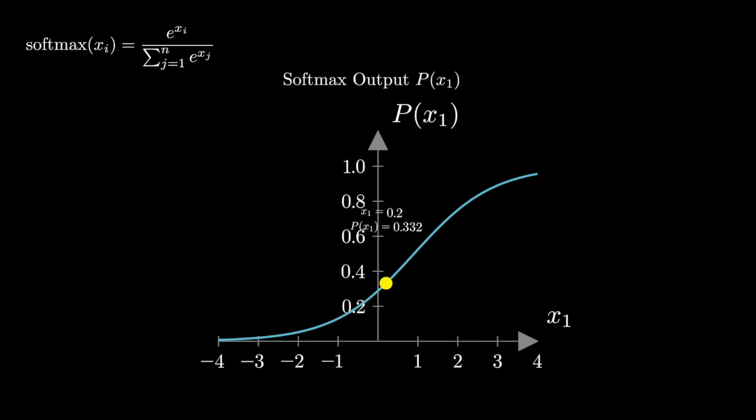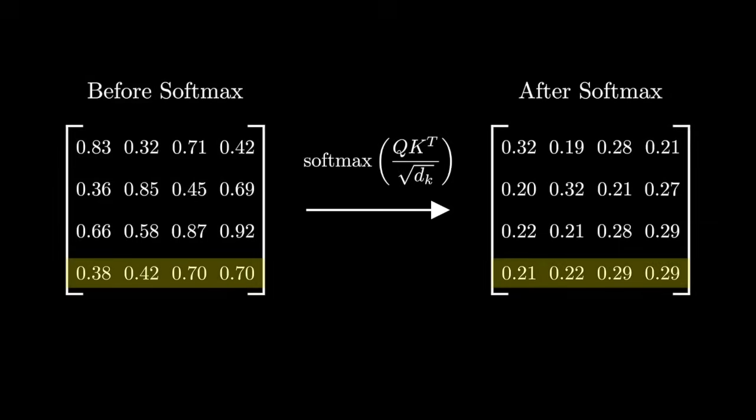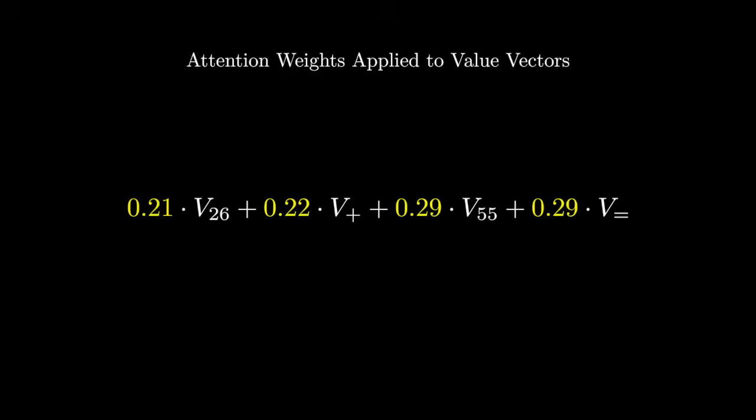Softmax then turns attention scores into non-negative weights that sum to one for each query. The row corresponding to the equal sign query of attention scores we're focusing on here tells us how much each value vector will contribute to the updated meaning of the equal sign token. For example, the updated attention weights that you're seeing here for the equal sign token determine how strongly each value vector contributes to its updated representation.